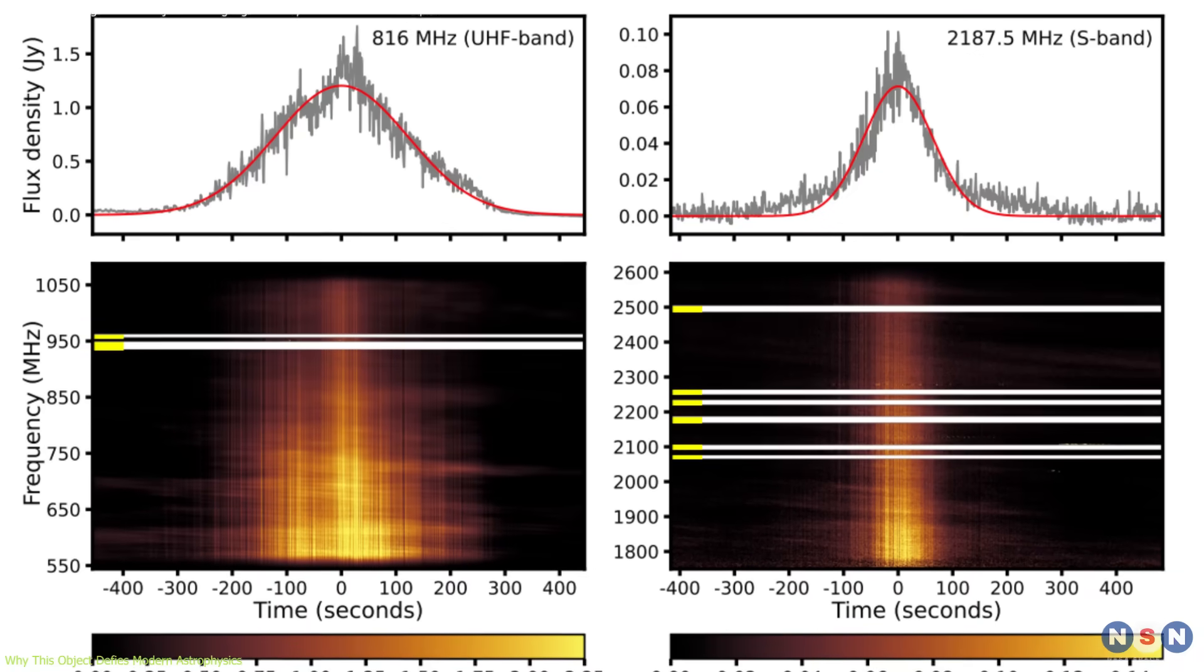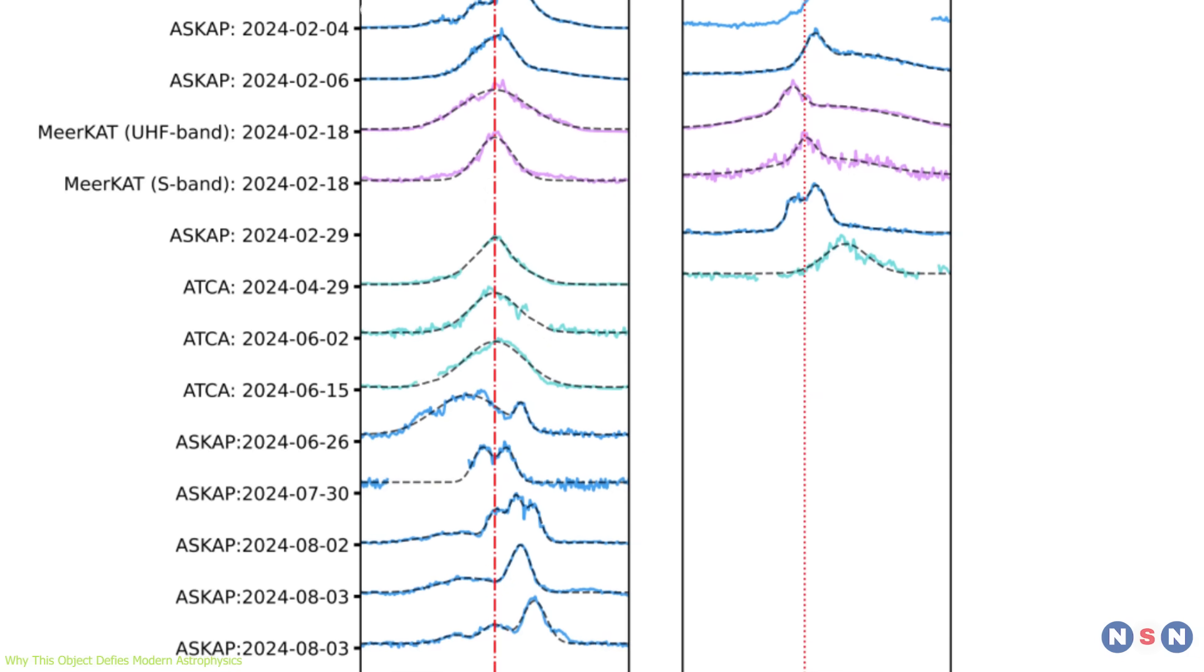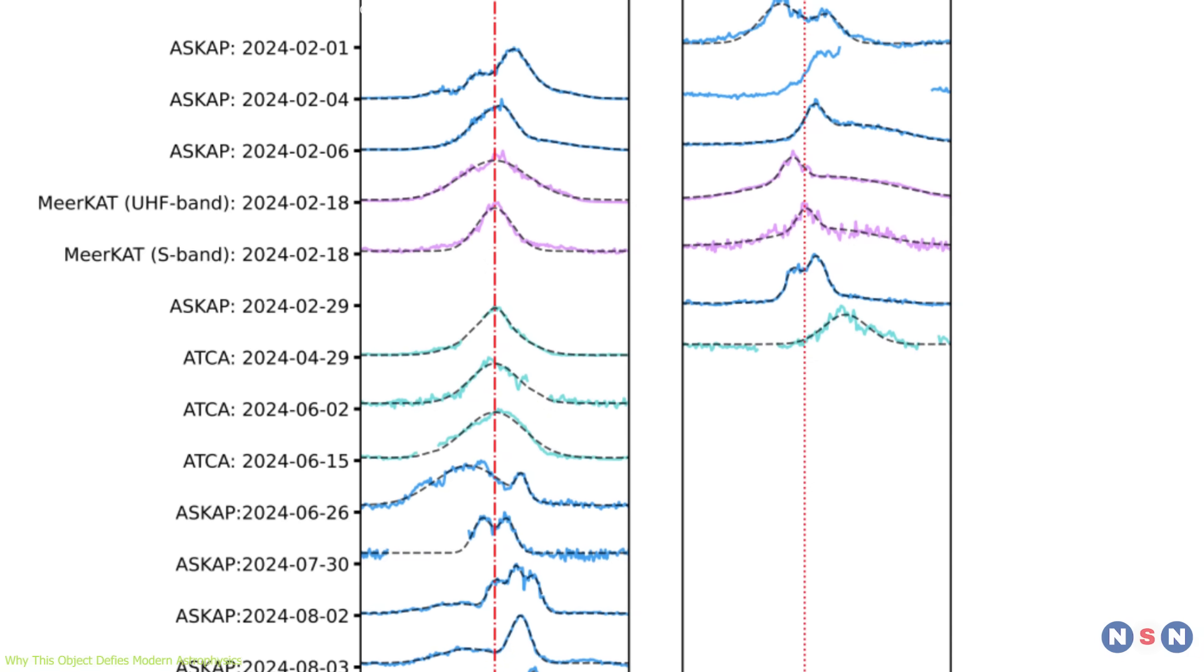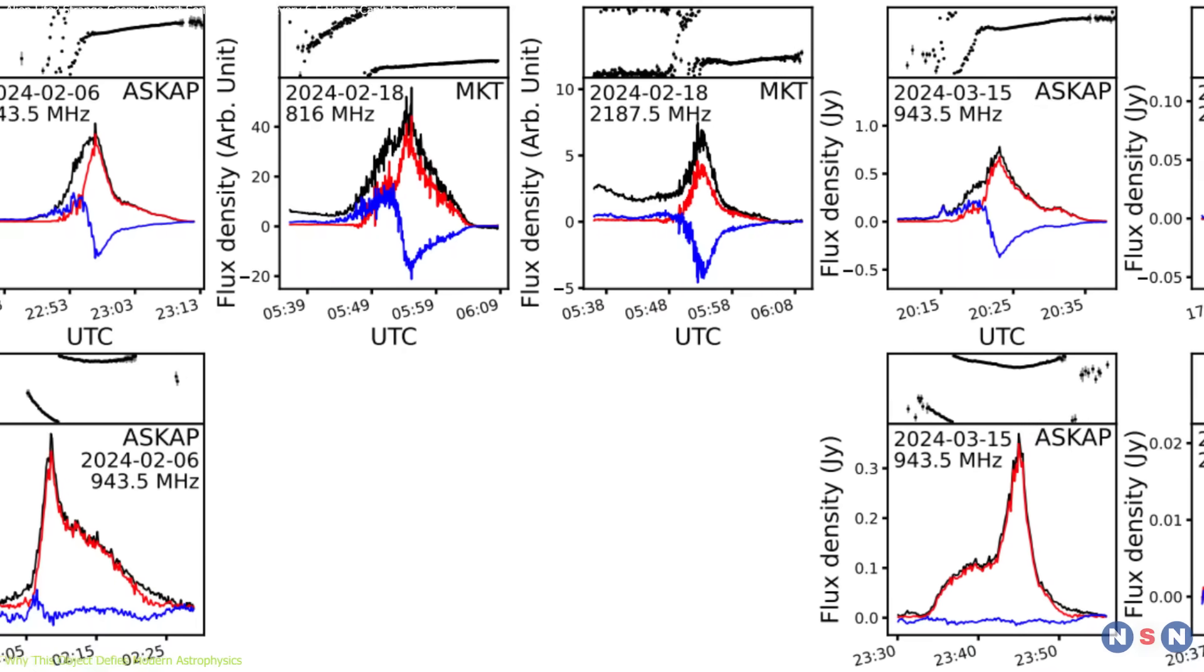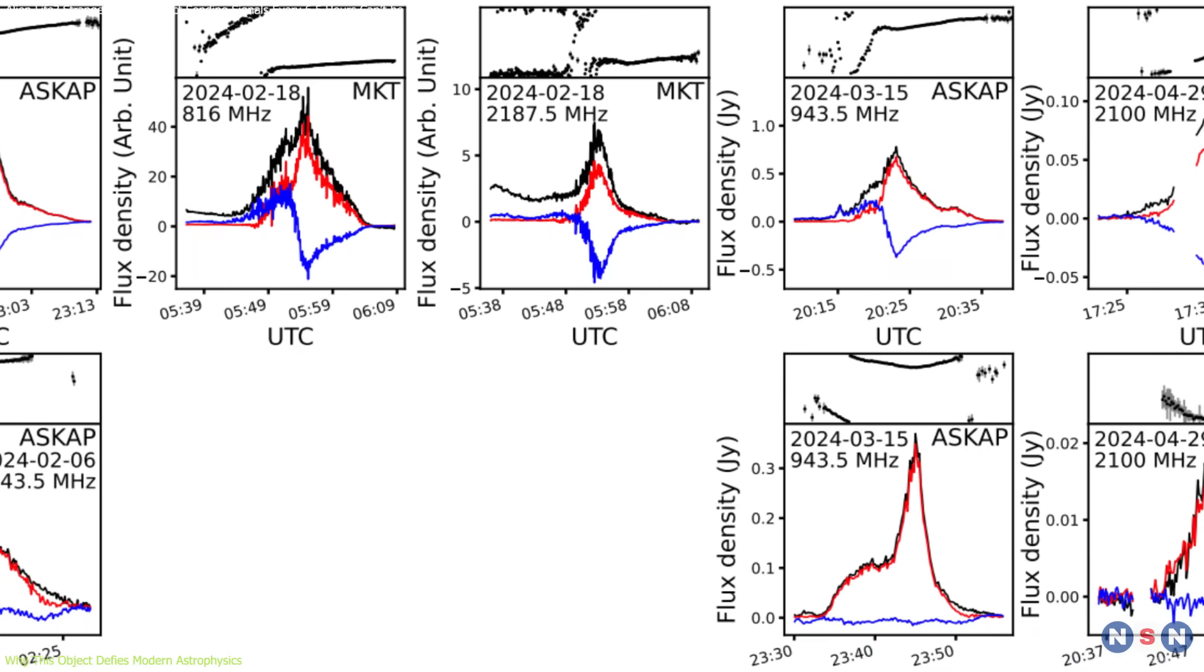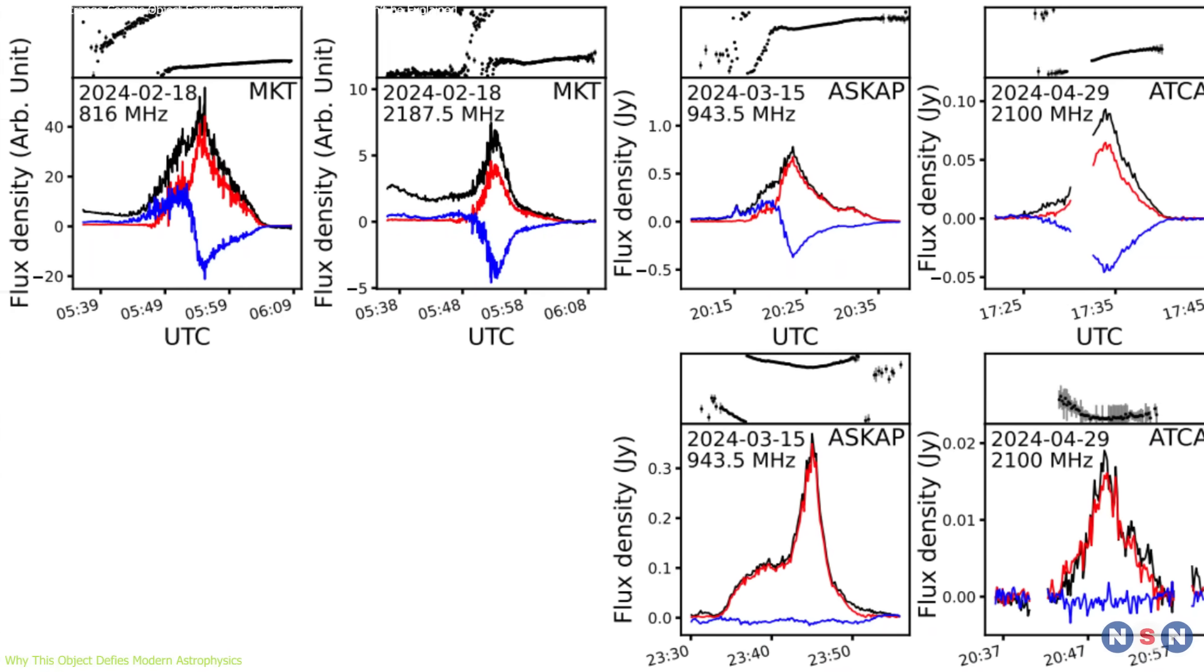ASCAP completely defies this expectation. Despite rotating once every 6.45 hours, it continues to emit strong radio waves, an impossible feat according to current astrophysical theories.